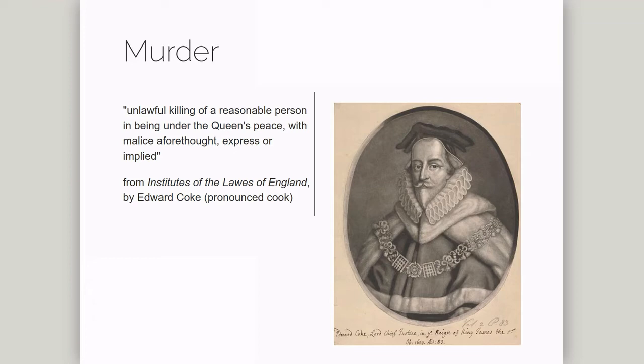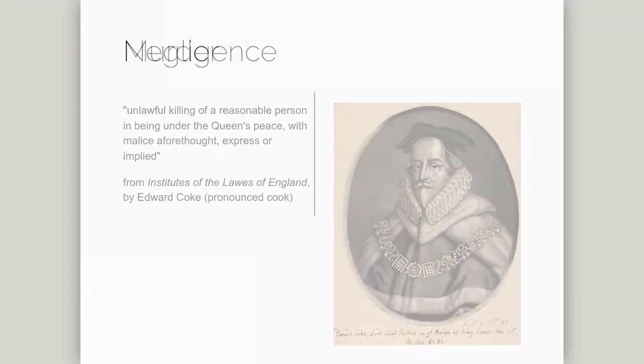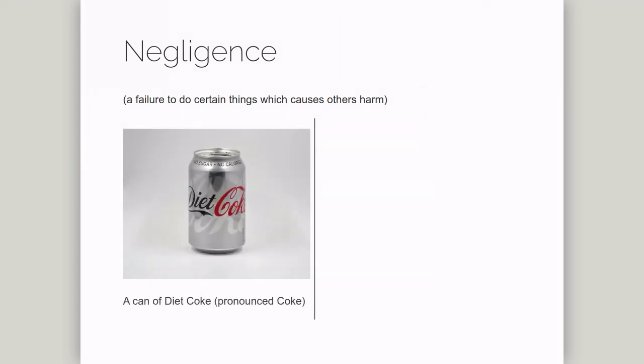Here's another example. Most legal systems have rules regarding negligence, or the failure to do certain things which causes other people harm. In code law systems, the civil law usually sets out the general principles of negligence. In English and Scots law, these general principles are found in past cases. For example, if you buy a can of Coke from a coffee shop and drinking the can of Coke makes you ill because of problems in its manufacture, you can sue the manufacturer of the can of Coke for negligence.